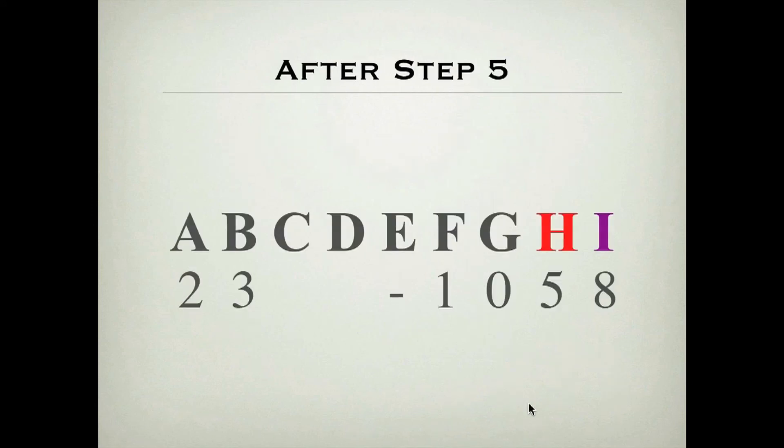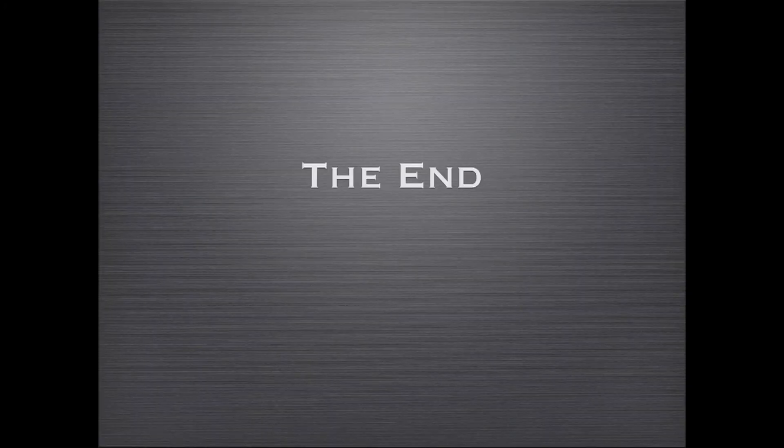And, at this point, we can clear the 4 from the E rod, and what's left on the Soroban is the multiplier, 23, and the product of the multiplication, 1058. Thanks.